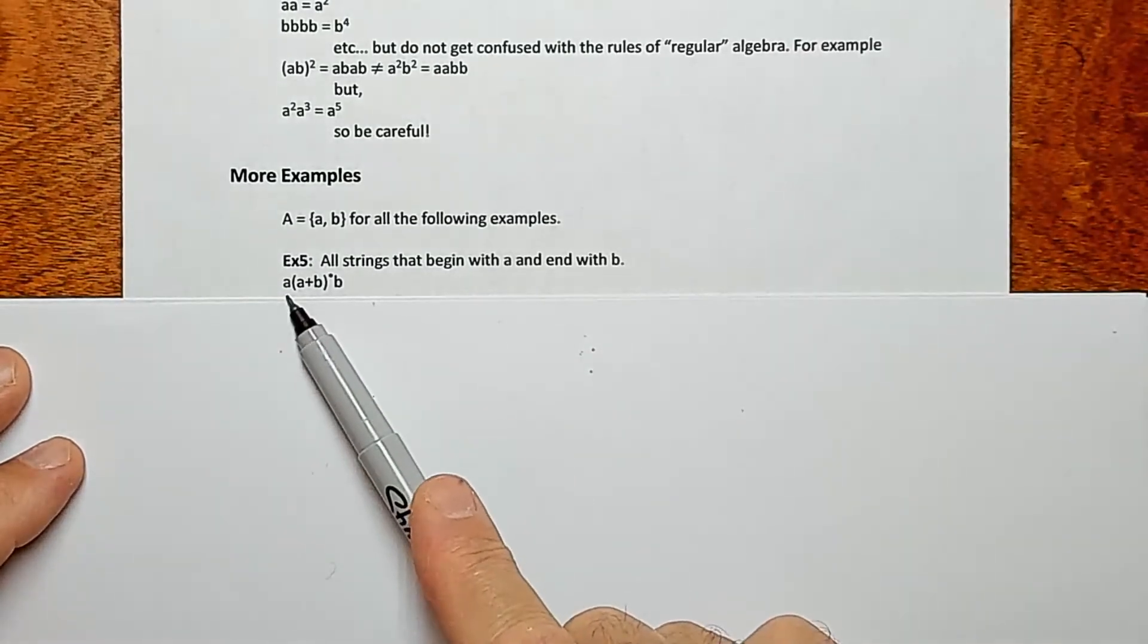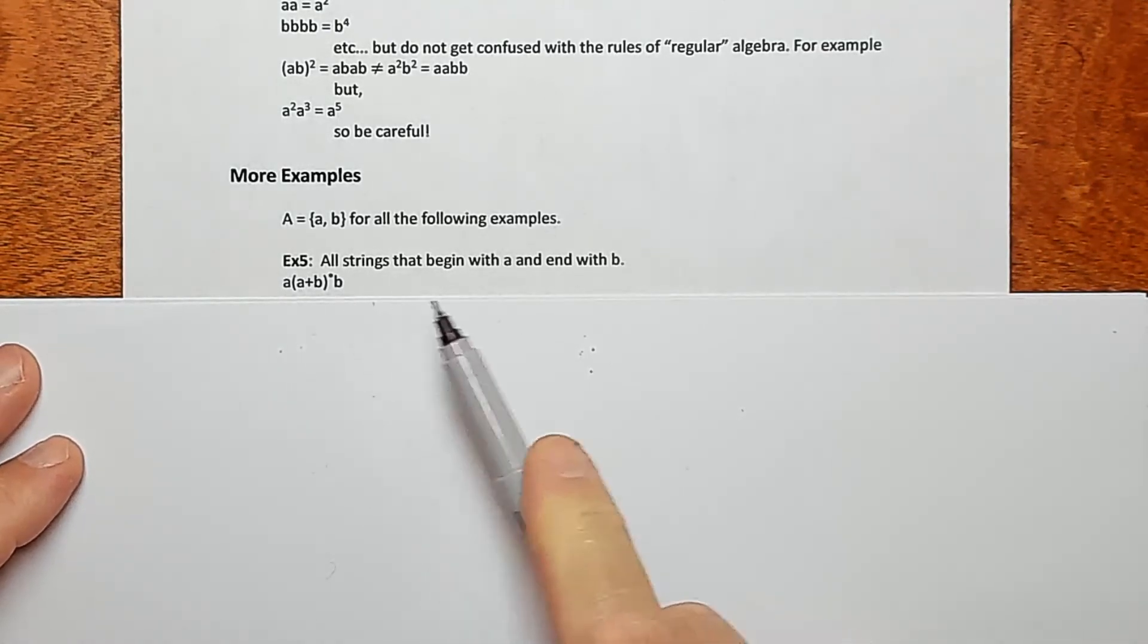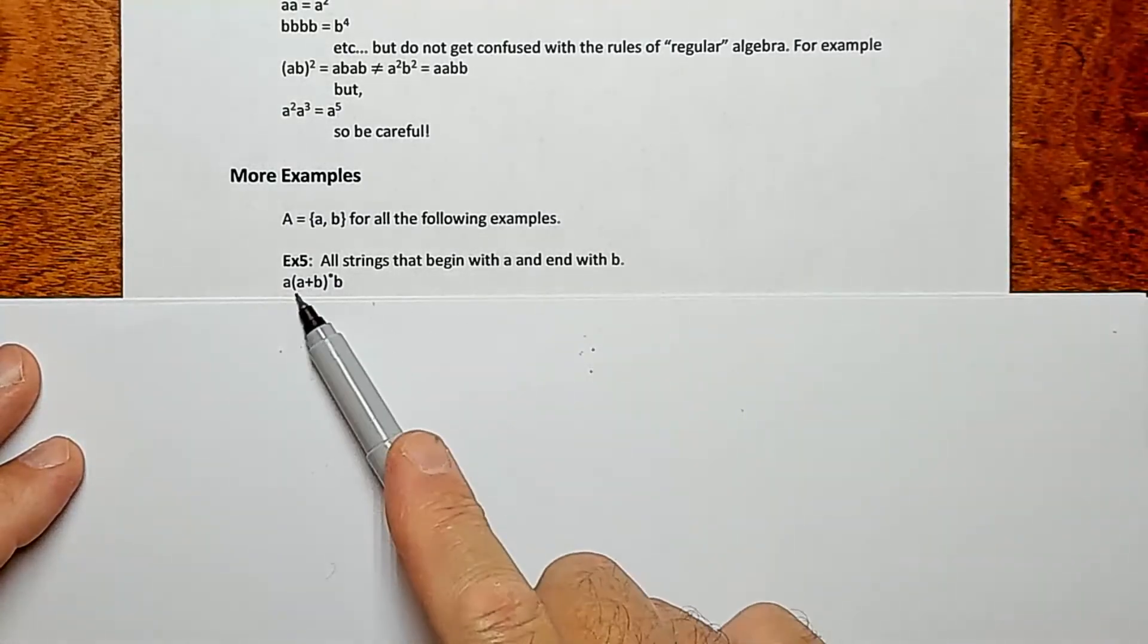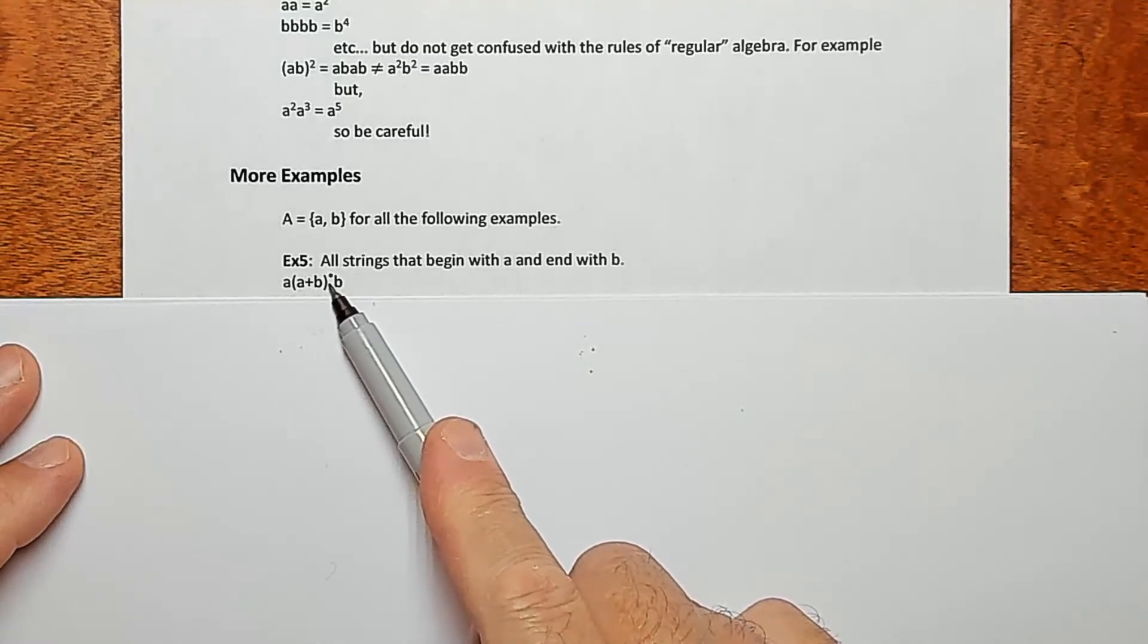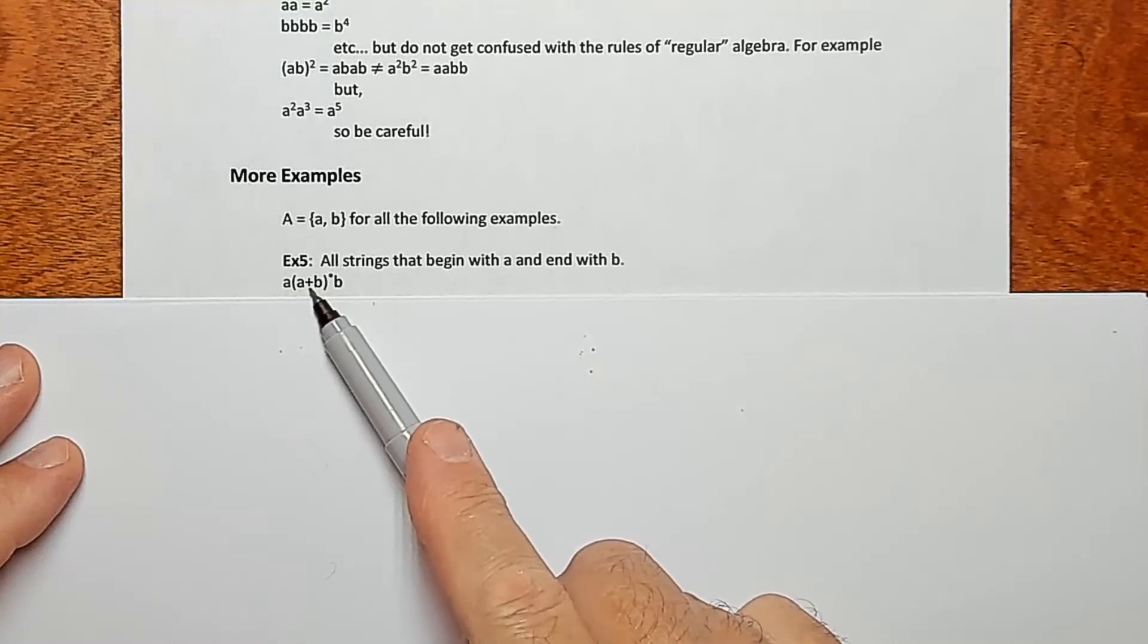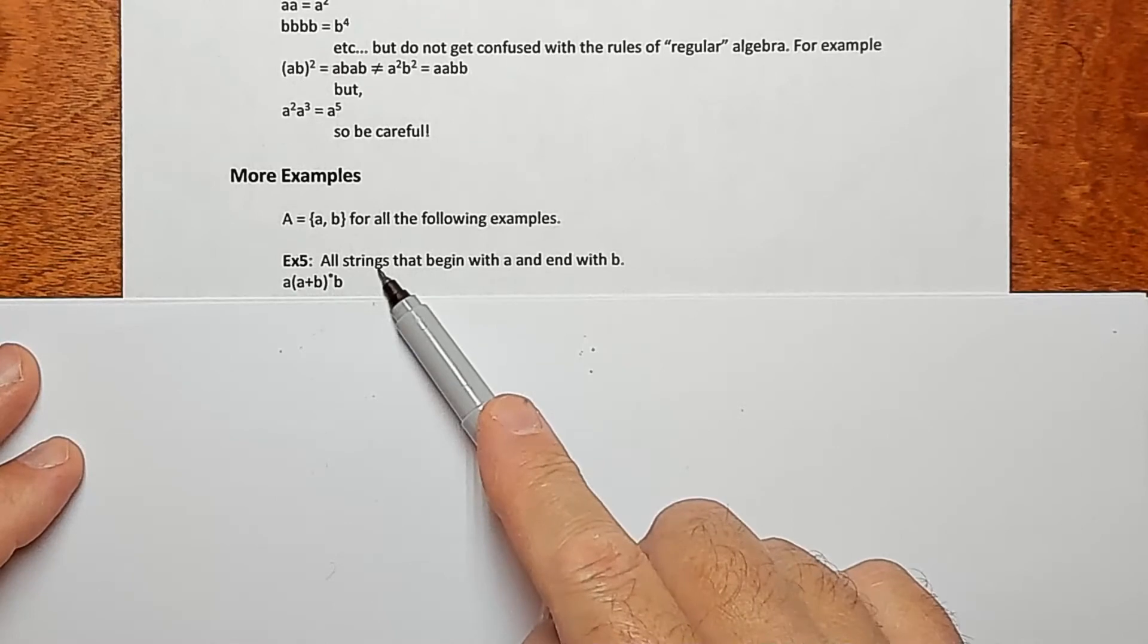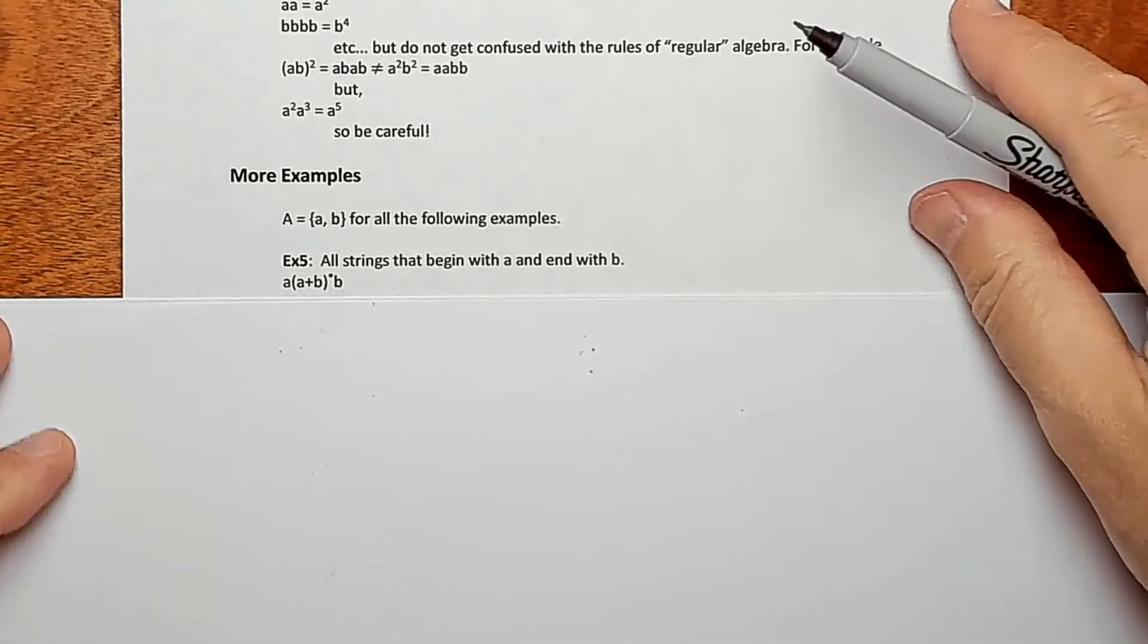What if we wanted to generate all strings that begin with A and end with B? Well, we'd explicitly list an A at the front and then explicitly list a B at the back. That satisfies our condition here. And then we've got this thing in the middle, the (A|B)*, which, remember from before, that will generate any string. Okay? So it starts with A, ends with B, and anything you want is in the middle. So this is all strings that have this A at the beginning and B at the end.